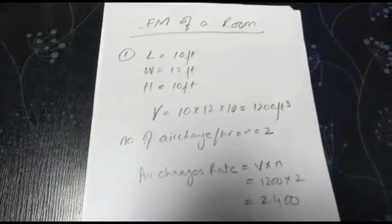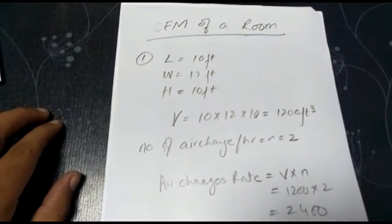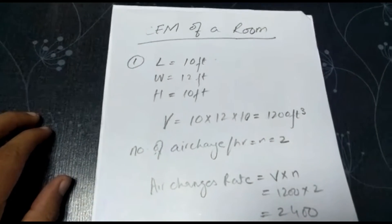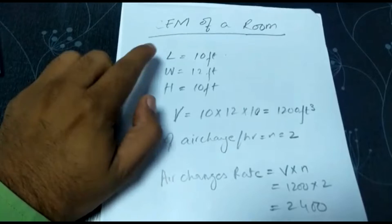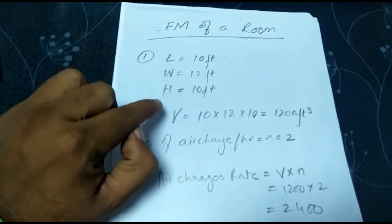Welcome to the channel, The Practical Study. This is a very simple video on how you calculate the CFM of a room. First of all, you need all dimensions of a room: length, width, and height. After that, you need to calculate the volume of the room.